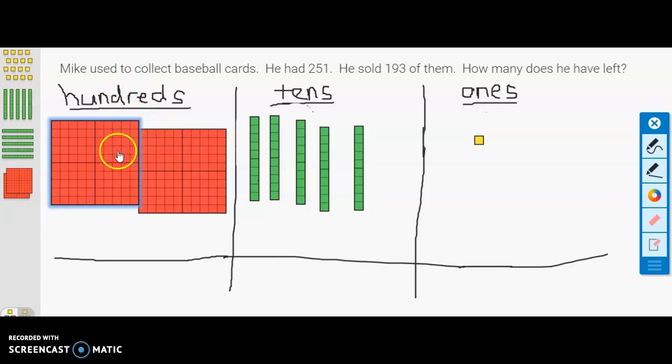I've represented the number 251 with base-10 blocks. So here's my hundreds with 200, right? 250: 10, 20, 30, 40, 50, and one. He sold 193 of them, so let's record that. He sold, take away 100.